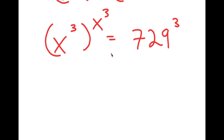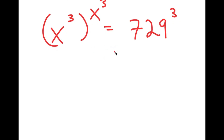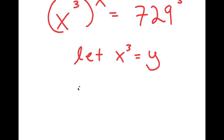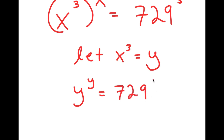So now from here, I'm going to let x to the power of 3 equal to the variable y. So I get y to the power of y is equal to 729 to the power of 3.